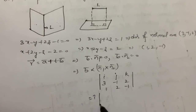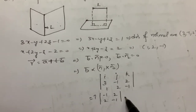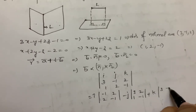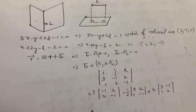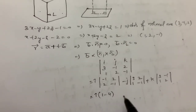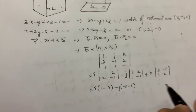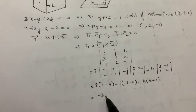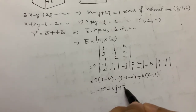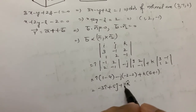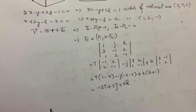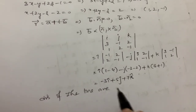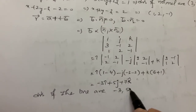So N1 cross N2 gives: I into ((-1)(-1) - (2)(2)) minus J into ((3)(-1) - (2)(1)) plus K into ((3)(2) - (-1)(1)), which is I(1-4) minus J(-3-2) plus K(6+1), giving 3i plus 5j plus 7k. So the direction ratios of the line are (-3, 5, 7).